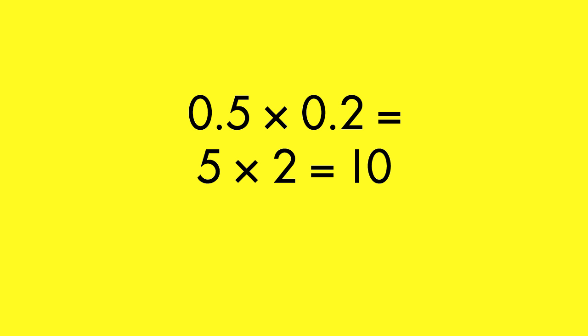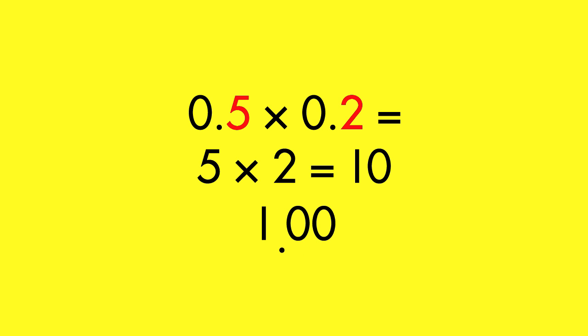Then, count the number of places to the right of the decimal point in both factors: one, two. Finally, move the decimal point in the product that same number of places to the left: one, two.